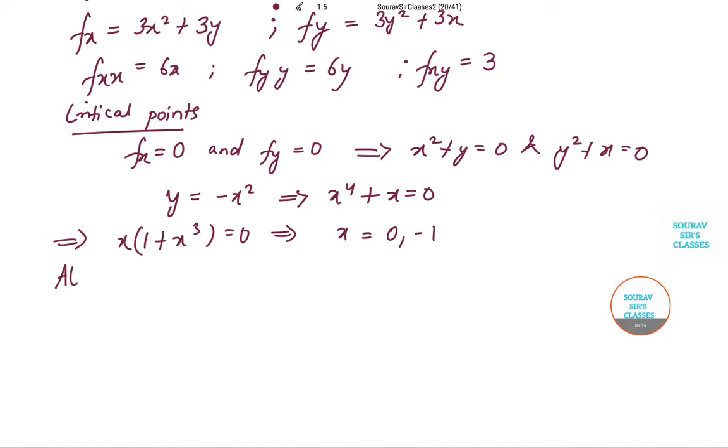Now at x is equal to 0, y is equal to 0, and at x is equal to minus 1. So the critical points become (0,0) and (-1,-1).